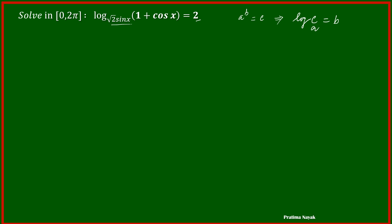I am converting this as an exponential function. So this implies that square root of sin x whole power 2 is equal to 1 plus cos x. Since I have to find the value of x, I am simplifying this. It will be 2 sin square x is equal to 1 plus cos x.